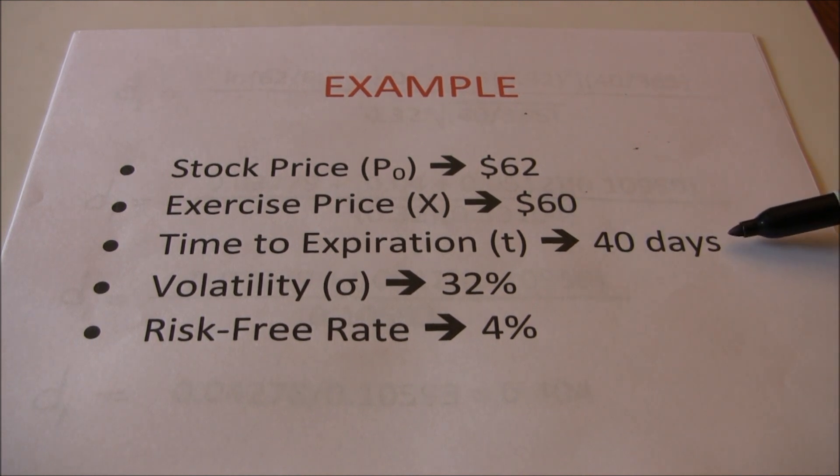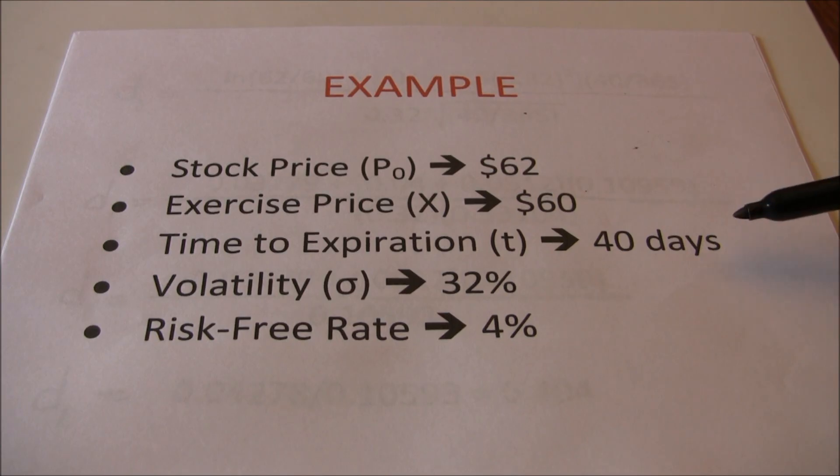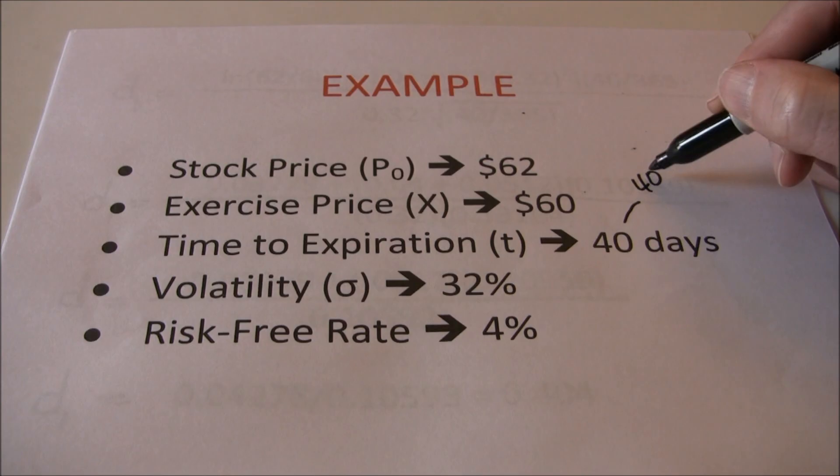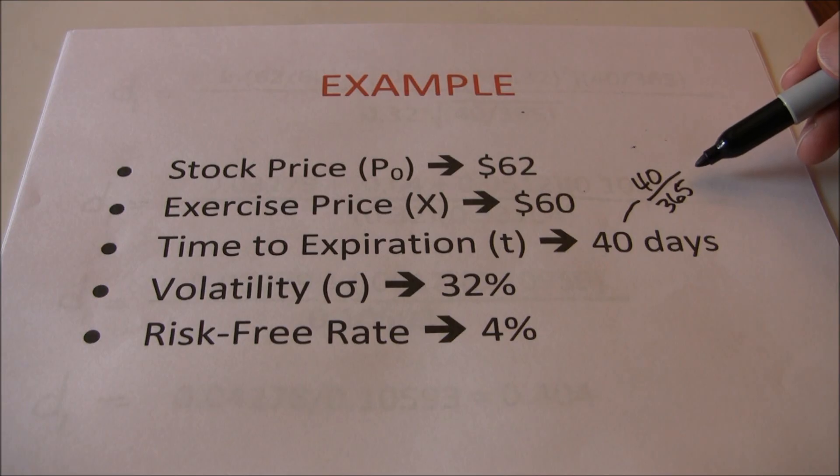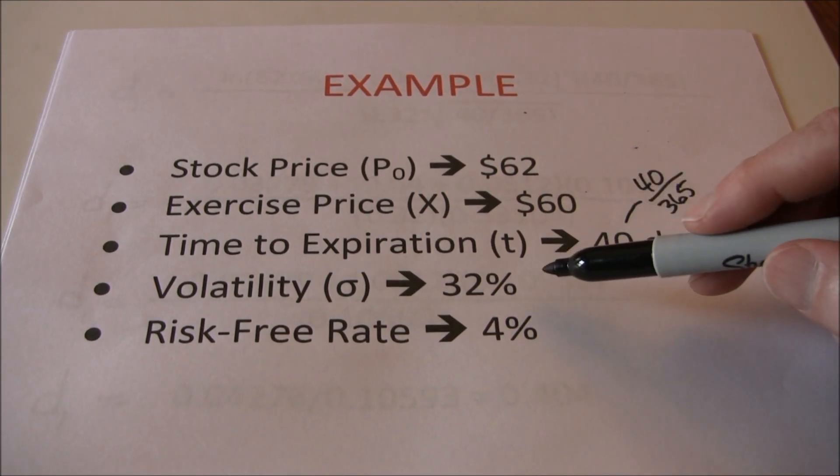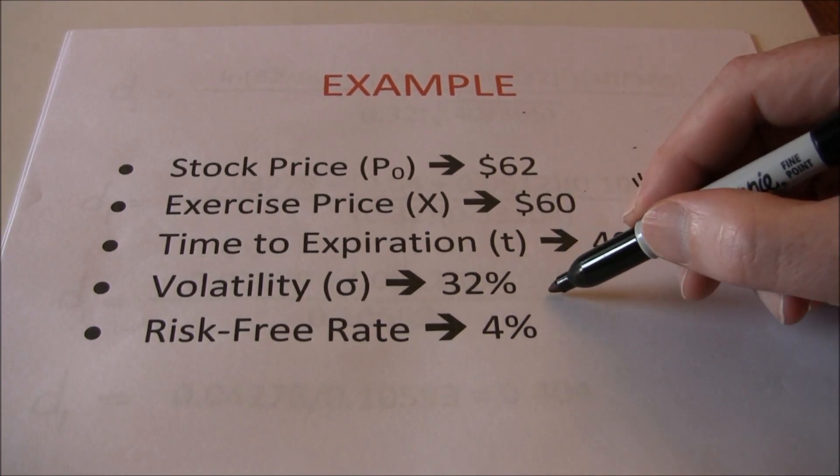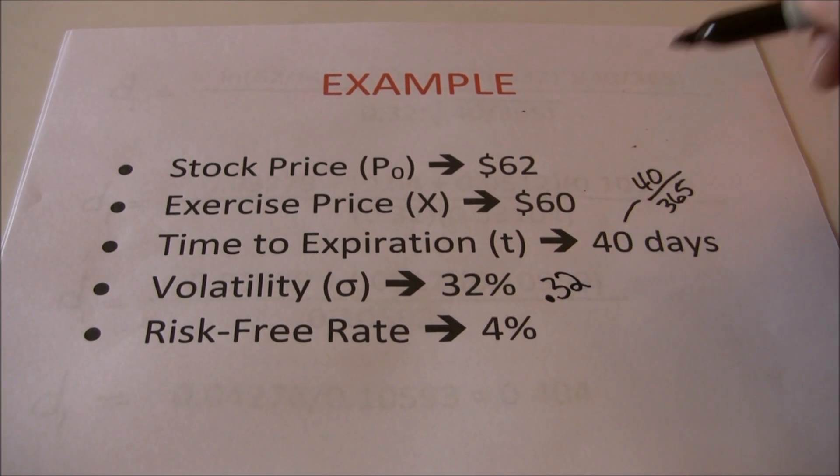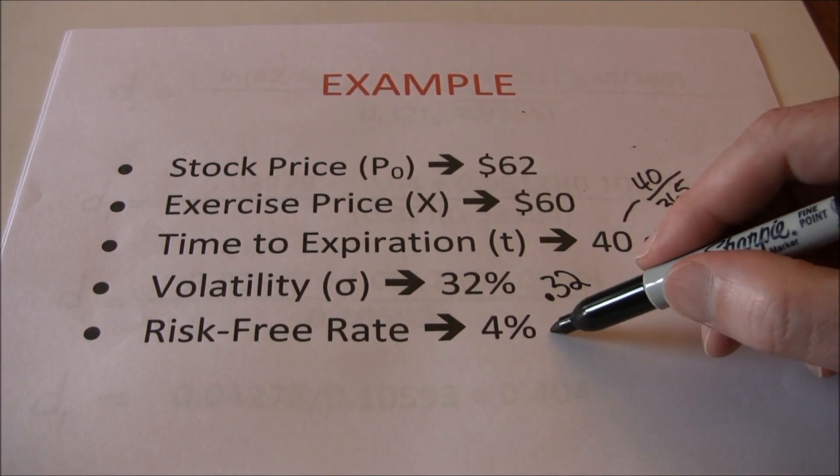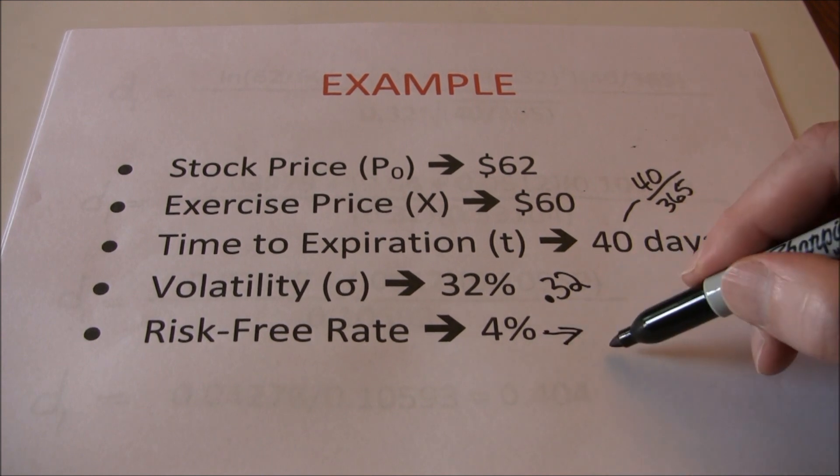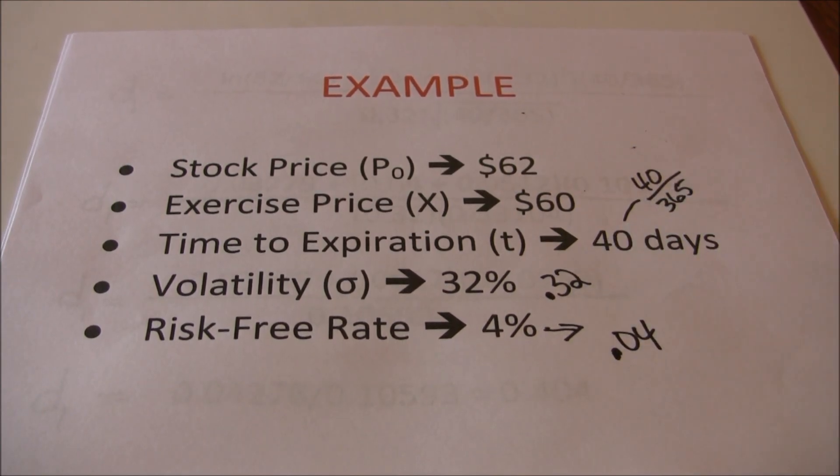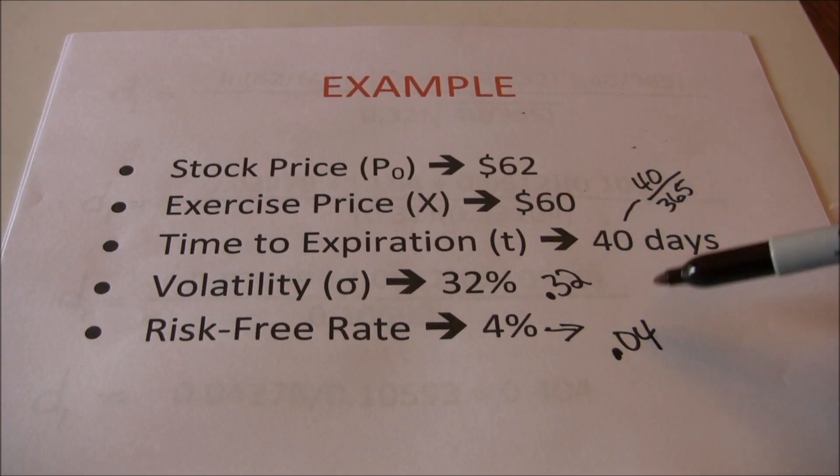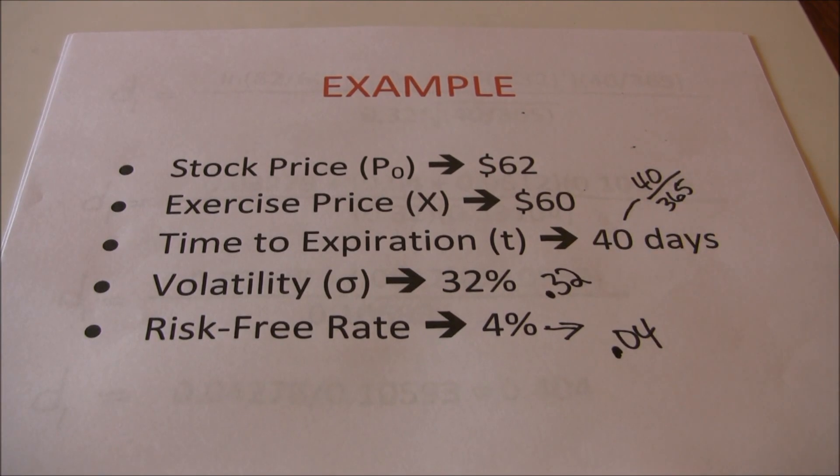Time to expiration is 40 days. Now remember this is fraction of a year so when we plug that into the formula it's going to be 40 over 365, 40 days out of 365 days per year in order to set up time. Volatility 32% and again when we plug that in to our formulas it's going to be 0.32 and the risk-free rate of 4% and when we plug that into our formulas it's going to be 0.04. So our percentages have to be plugged into the formula as decimals and time should be as a fraction of a year.